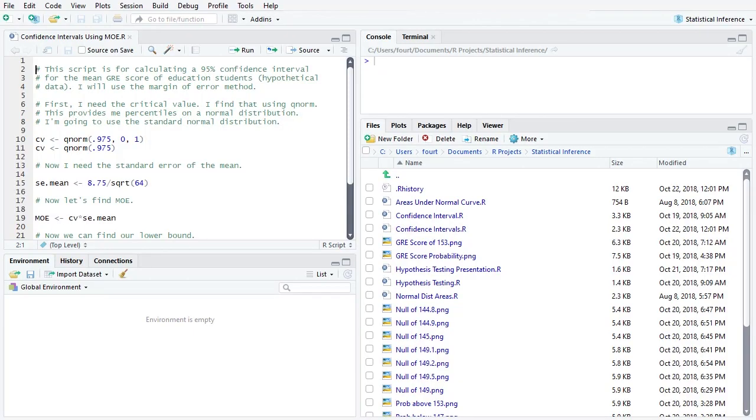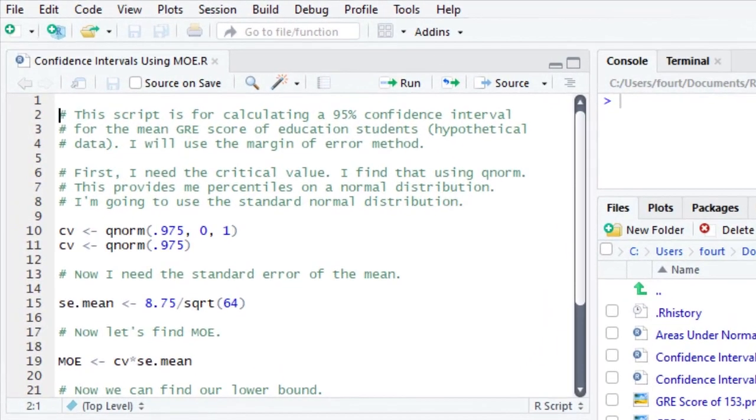Now let's use R and see how much simpler it is to create confidence intervals for the mean using the margin of error. This script is for calculating a 95% confidence interval for the mean GRE score of education students. These are hypothetical data. But this time, I will use the margin of error method.